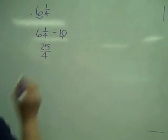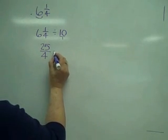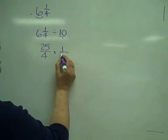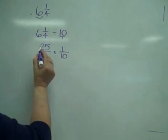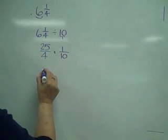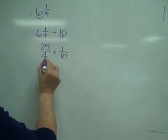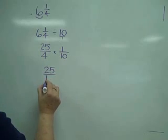Remember this starts as 10 over 1. When I invert and multiply, this goes to 1/10. Now doing some cancelling or not. I can take 25 times 1 is 25, 4 times 10 is 40.